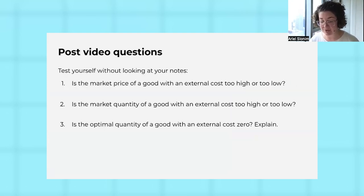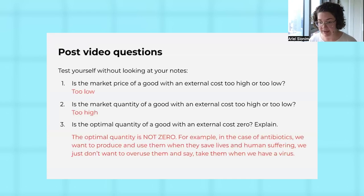Then we ask students to not look at their notes and test their knowledge. We want to make sure they're pulling out the major points here and can recall them and build that memory. The optimal quantity is not zero. That's one of the things we do want them to take away: when you have a market with an externality, it's not that there should be no production. It's just that the production should match the social cost.